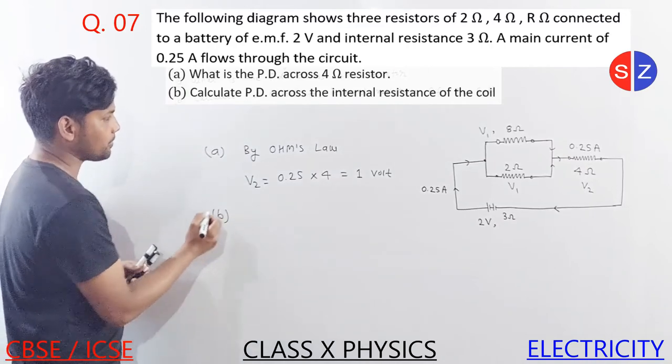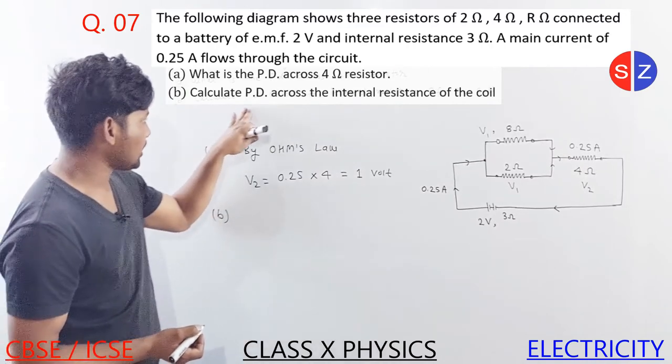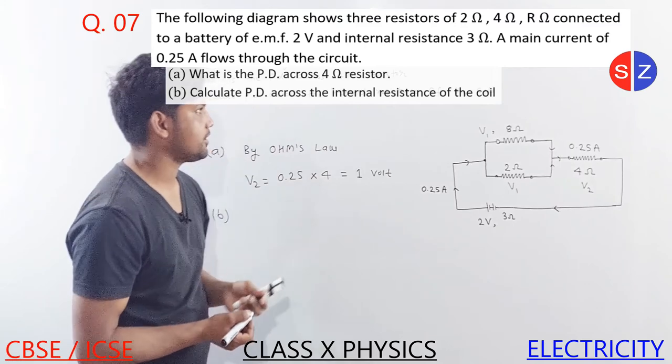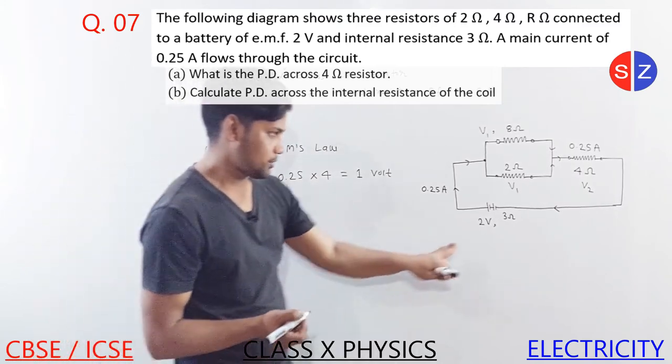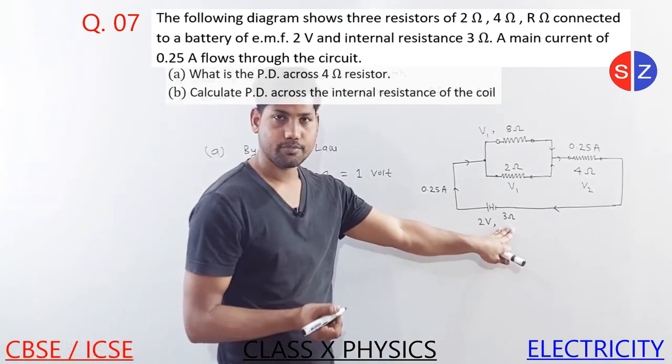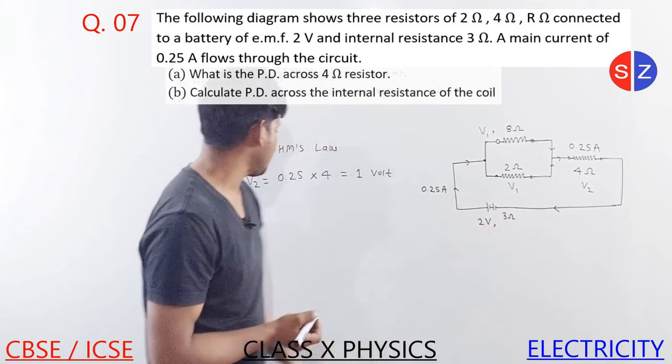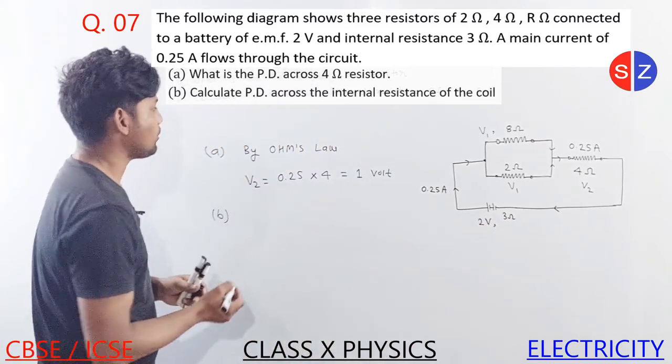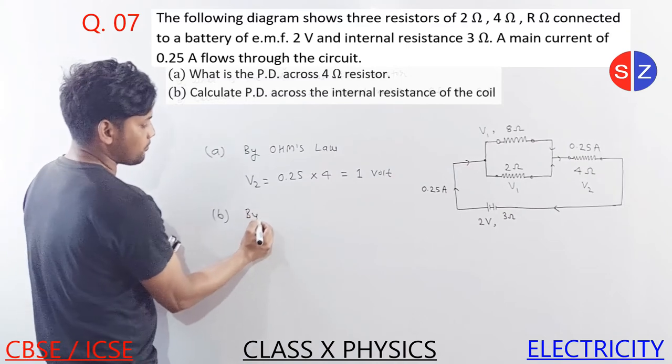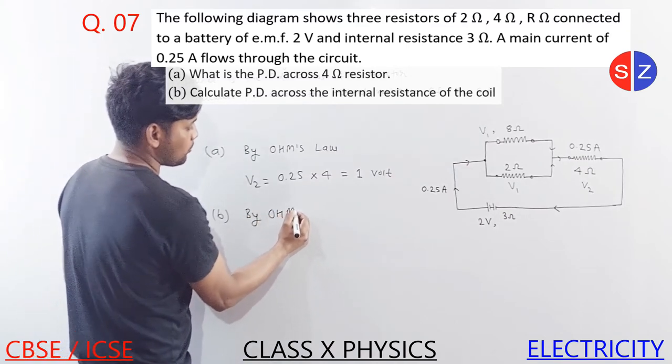Second, what do we have for part B? Calculate the PD across the internal resistance of the cell. Here, the internal resistance is placed - this battery has internal resistance, and we have to find the PD across it. So we use Ohm's law again.